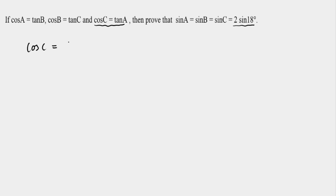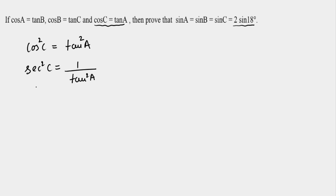Let's start with the third relation: cos C = tan A. Let's square both sides. Taking the reciprocal, we get sec²C = 1/tan²A. Opening sec²C as 1 + tan²C and moving 1 to the other side, we get tan²C = (1 - tan²A) / tan²A. Let's call this our first relation.